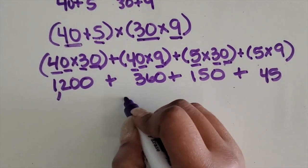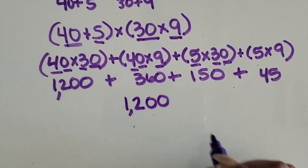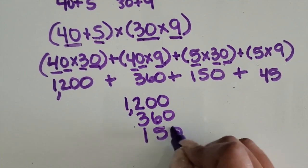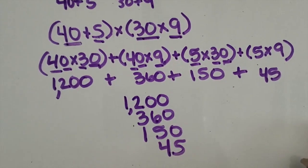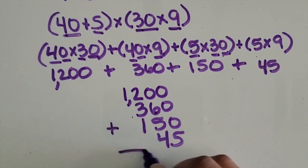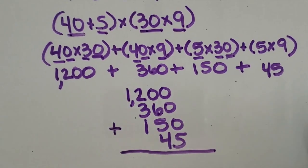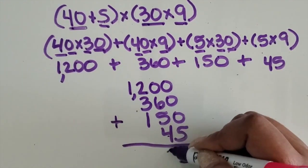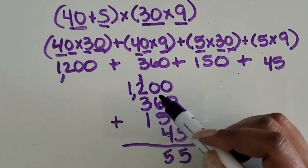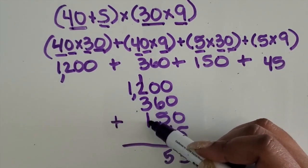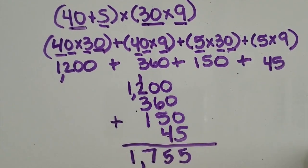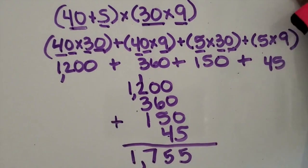If it's too much for students to add mentally, they can line up their products based on place value so that they are adding correctly. In the ones place we have 5 ones. In the tens place, 6 and 4 is 10 plus 5 is 15 — that gives us an extra 100. 1 plus 2 plus 3 plus 1 is 7 hundreds, and then 1,000. So our product is 1,755.